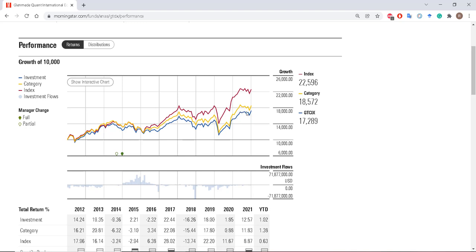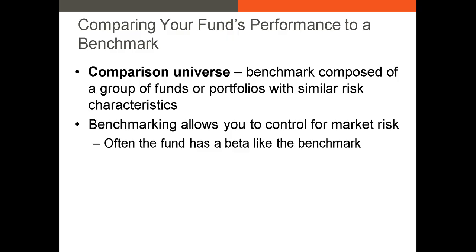Because even if our fund performed very well, if other funds or an index with similar risk characteristics outperformed, that's not very good — it indicates that we technically underperformed regardless of how good our return was. One big benefit of the benchmark is that it allows you to control for the risk of your portfolio. You can accept more market risk in exchange for a higher return. If our fund is underperforming the benchmark, this will often cause the management of our fund to be replaced, and it'll often cause investors to pull their money out.